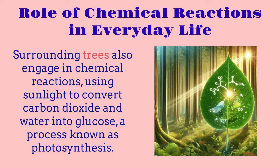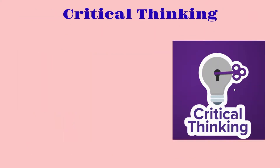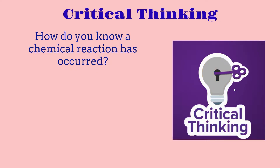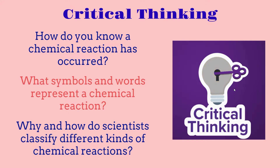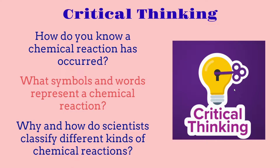This is basically just a kickstart into our new chapter, Chapter 3. Now we're going to talk about some critical thinking problems. The first question is: how do you know a chemical reaction has occurred? The second is: what symbols and words represent a chemical reaction? And the third is: why and how do scientists classify different kinds of chemical reactions? We're going to answer all of these in the upcoming videos inside of this chapter.